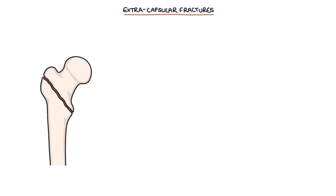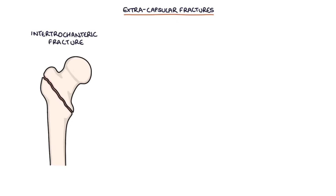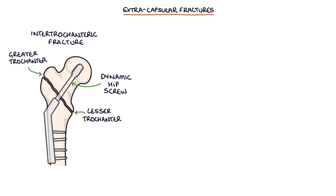Extracapsular fractures — fractures outside of the hip capsule — leave the blood supply to the femoral head intact, so the femoral head does not need to be replaced. Intertrochanteric fractures occur between the greater and lesser trochanter and are treated with a dynamic hip screw, also known as a sliding hip screw. A screw goes through the neck and into the head of the femur, and a plate with a barrel holds the screw and is fixed to the outside of the femoral shaft, allowing controlled compression at the fracture site to improve healing.